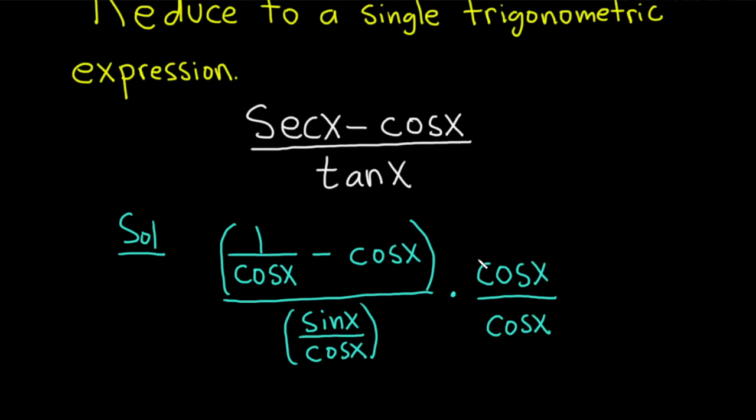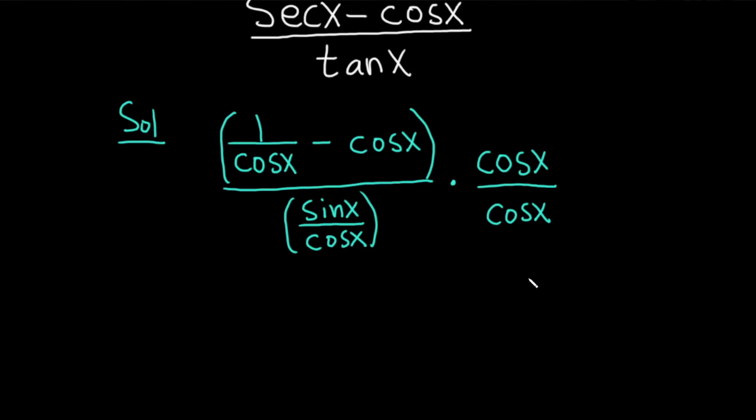Just multiplying by 1, which is the same thing we have here because the cosines cancel. Now we can distribute.